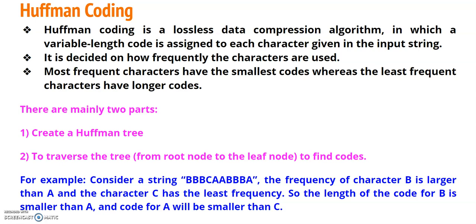First of all we will understand what Huffman coding means. Huffman coding is a lossless data compression algorithm in which a variable length code is assigned to each character given in the input string. It is decided based on how frequently the characters are used in the string. The most frequent characters are assigned the smallest codes, whereas the least frequent characters have longer codes.